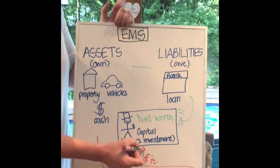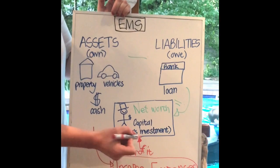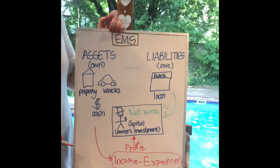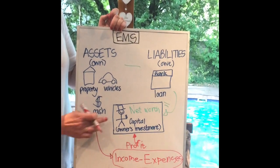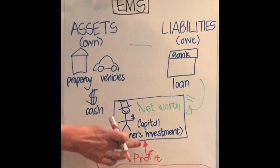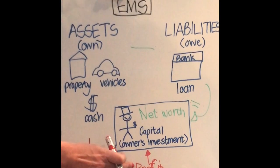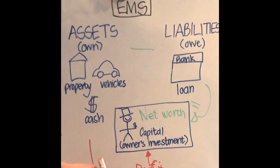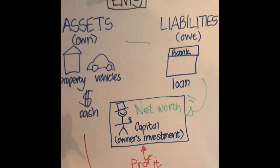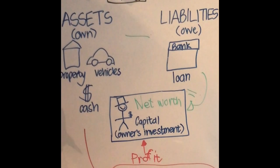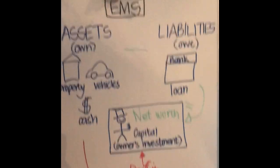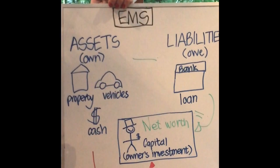The profit then also belongs to the owner. So that means that over time, if you take the initial capital and you add the profit — or the effects of all the incomes and the expenses — you will also be able to work out the net worth. So that's another way of working net worth out.